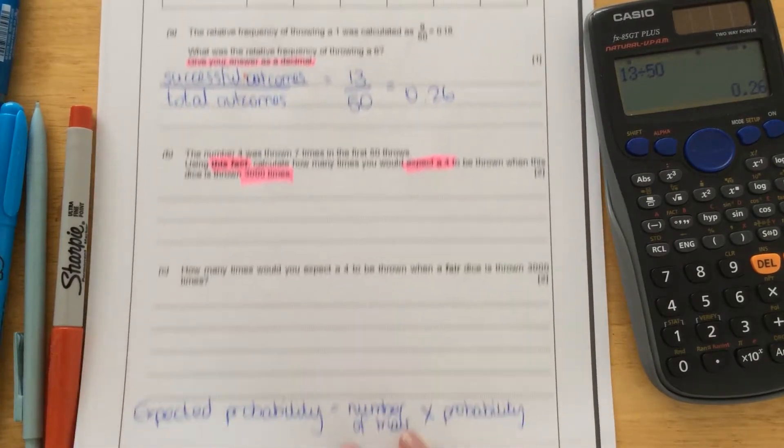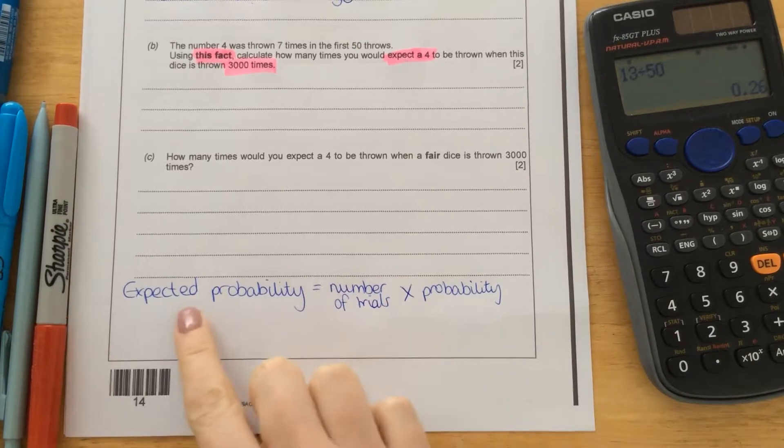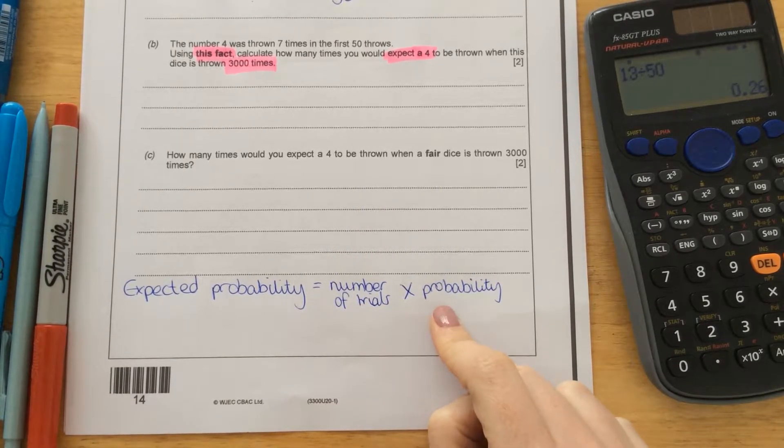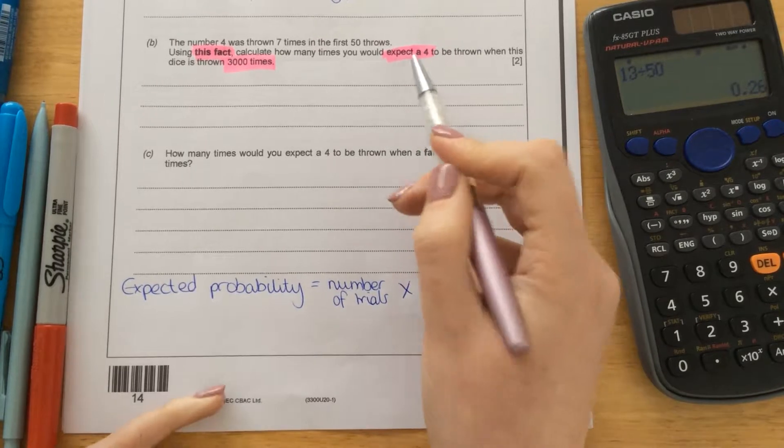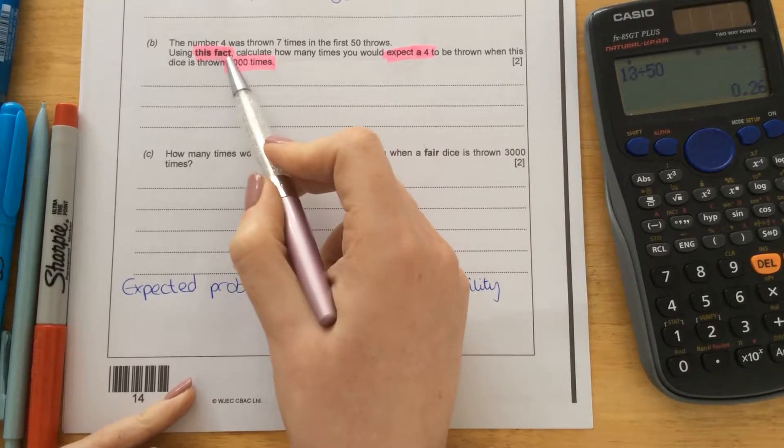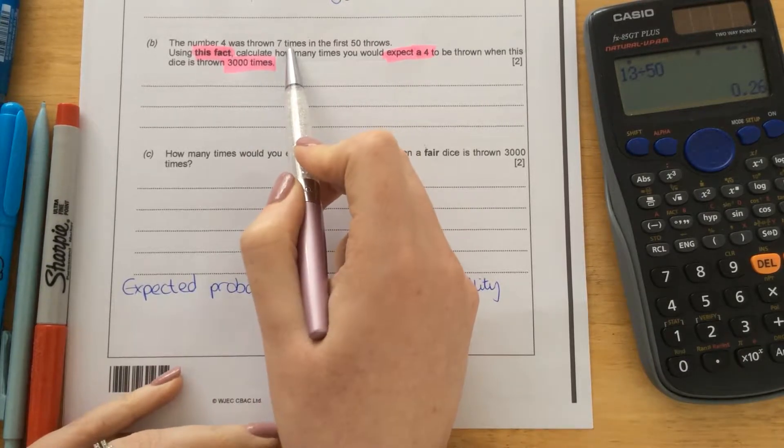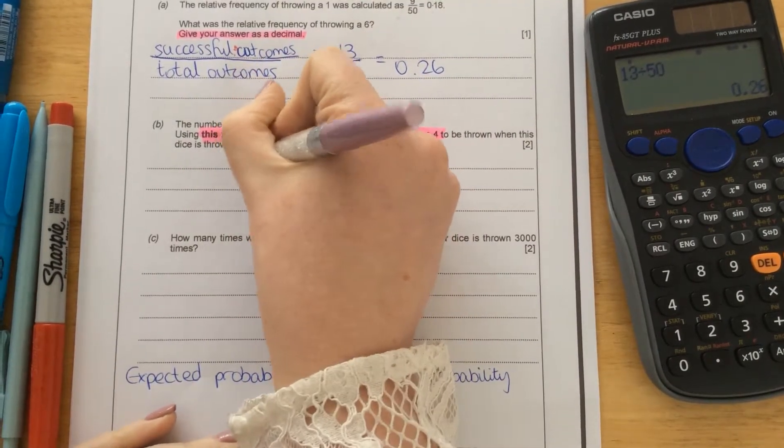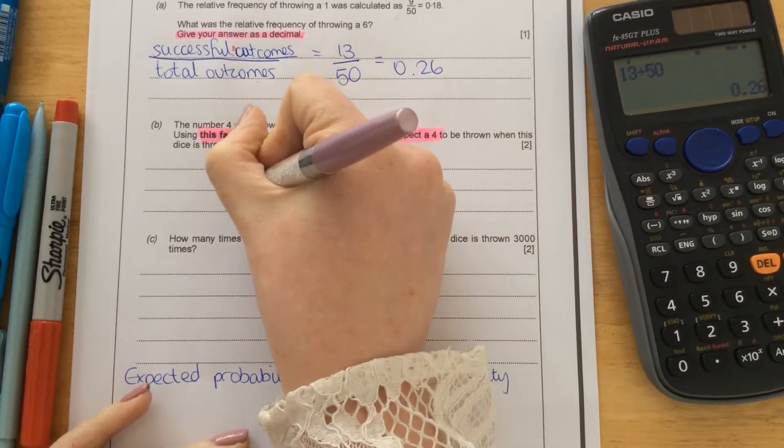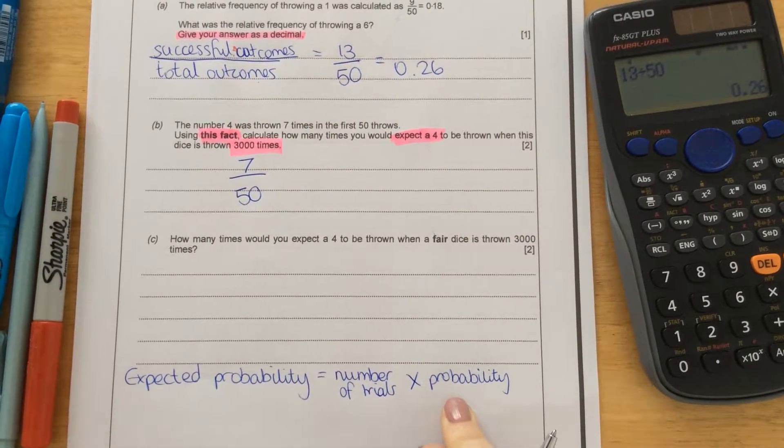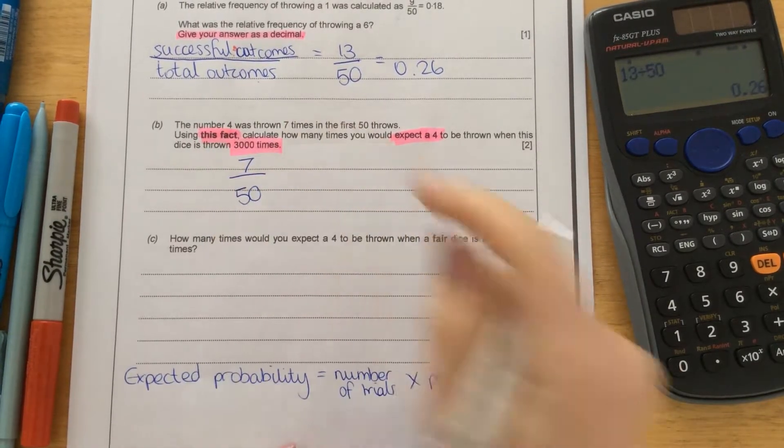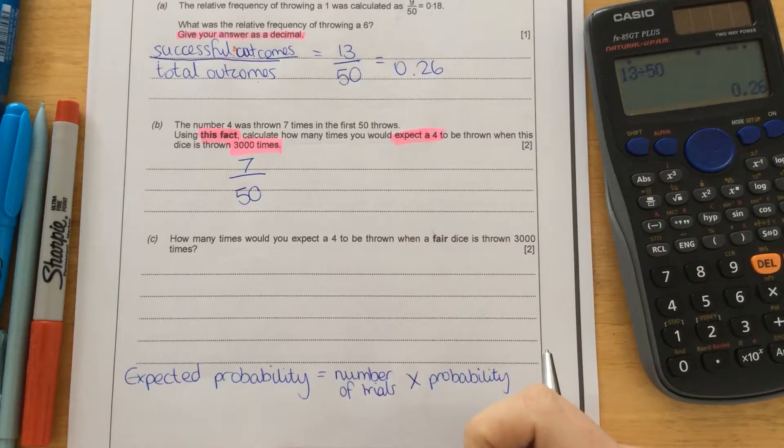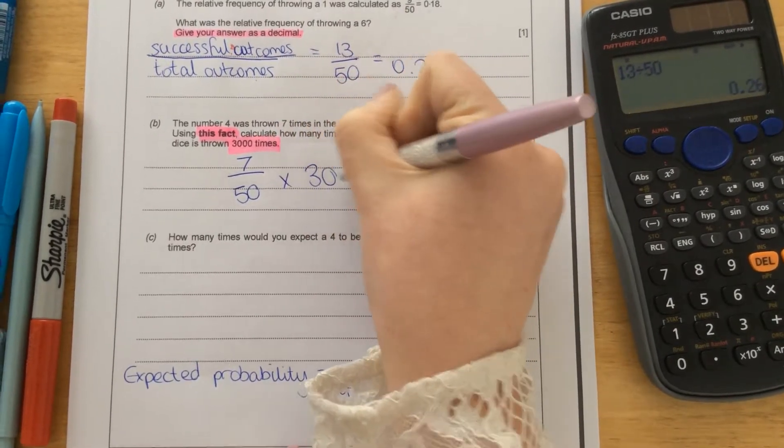So this is talking about expected probability now. So to work out expected probability, you take the number of trials, or the number of times that the dice is thrown, and you times it by the probability. So the probability that we roll a 4, they've said to use this fact. The number 4 was thrown 7 times in the first 50 throws. So that means the successful outcomes were 7 out of 50. So that's the probability of throwing a 4. And it says that the dice was thrown 3,000 times. So that's our number of trials. So we're going to times that by 3,000.